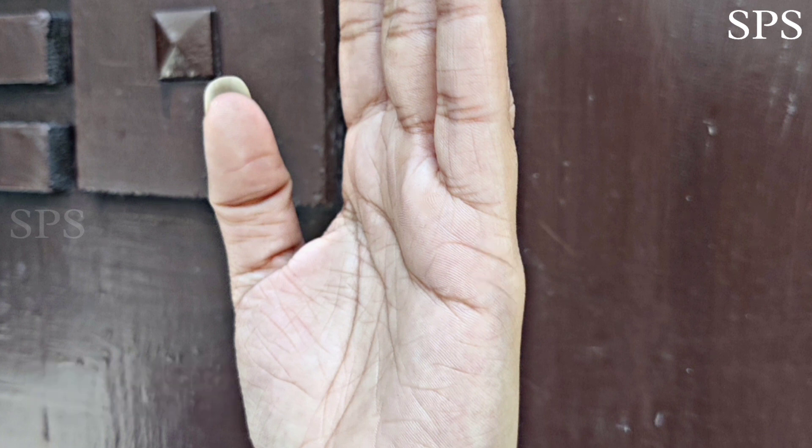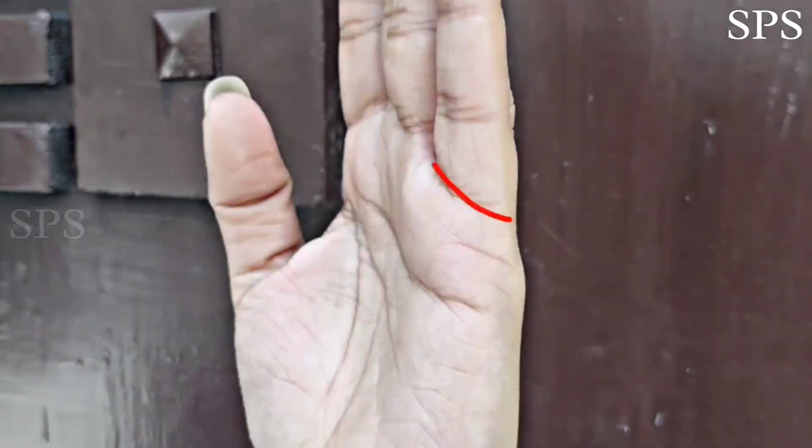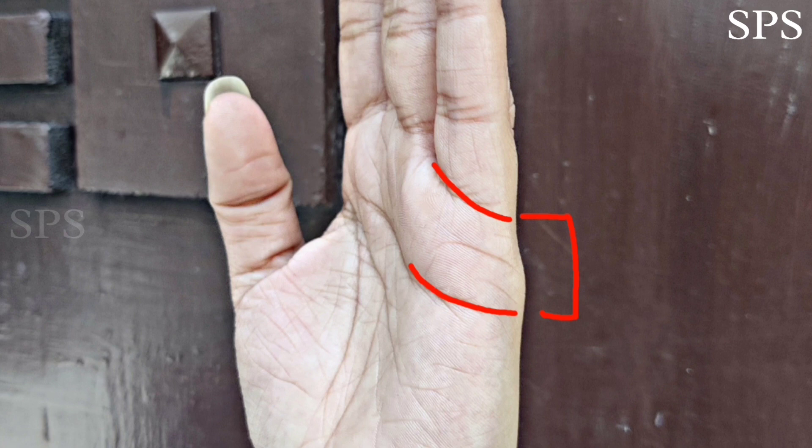You have to add some lines to know about your marriage age. First, add a bottom line of your little finger and then the heart line. And these two lines make a big gap. The gap between these two lines is age from 1 to 50.